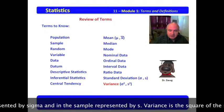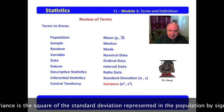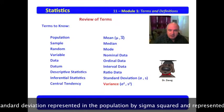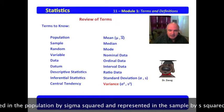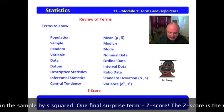Variance is the square of the standard deviation, represented in the population by sigma squared, and represented in the sample by s squared. One final surprise term.